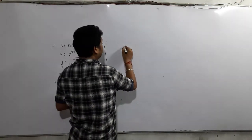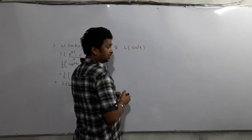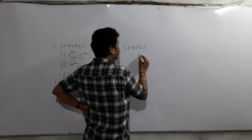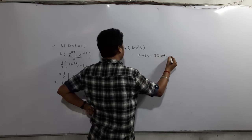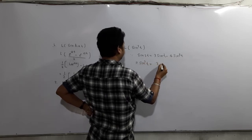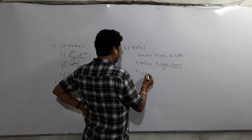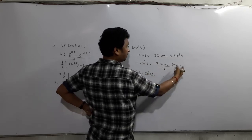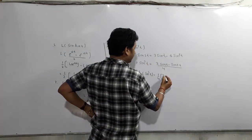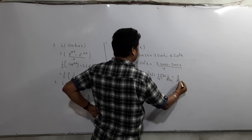So these 7 are very important results. Now suppose someone asks: what is Laplace of sin³t? We know only Laplace of sin(at), but here we have sin³t. So we use the trigonometric identity: sin(3t) = 3sin(t) − 4sin³(t), so sin³t = (3sin(t) − sin(3t))/4. Taking the Laplace: 4 is constant outside, so it becomes (1/4)[3 × 1/(s² + 1) − 3/(s² + 9)]. This is the answer.